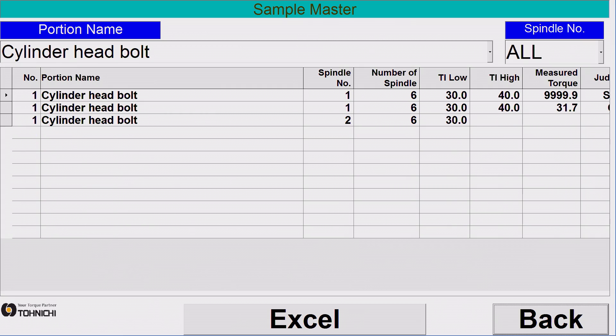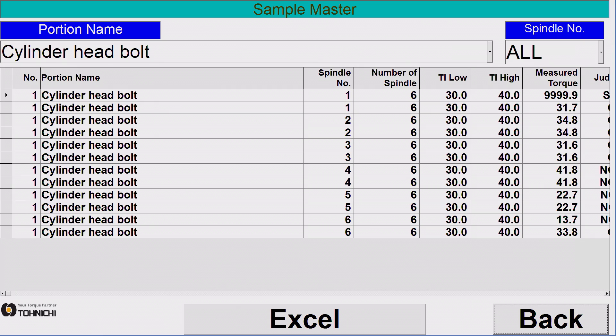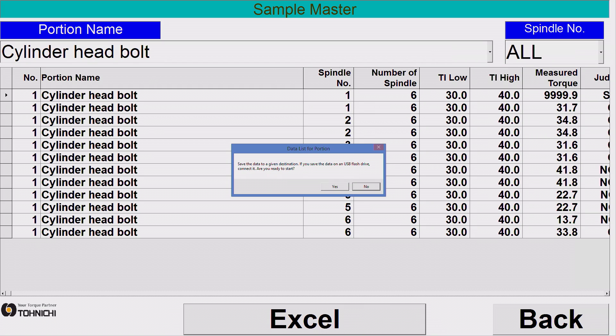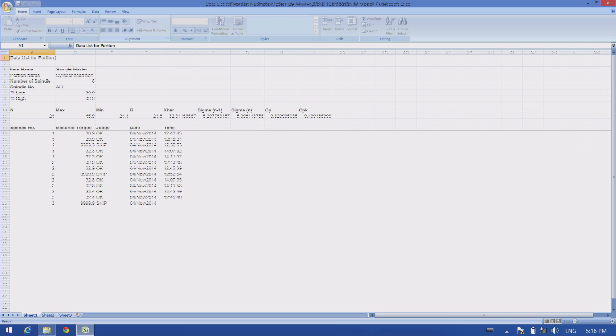In addition, with respect to each portion or spindle, statistic processing is available. Statistic processed data will facilitate to check the fluctuation of your process for preventing defects before they happen.